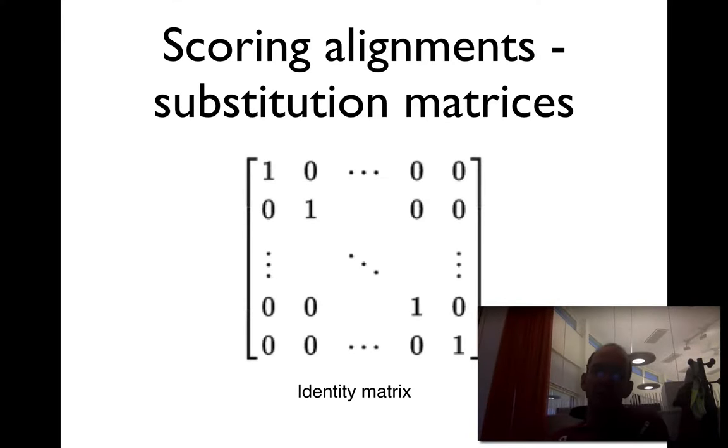Now we're going to talk about scoring matrices and scoring the alignments. How do we know what a good alignment is and how the scores are used? Particularly, we're talking about substitution matrices. Basically, what is the score you get when you align a certain letter to another letter?